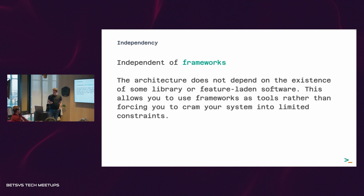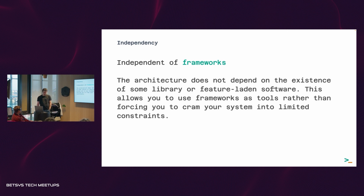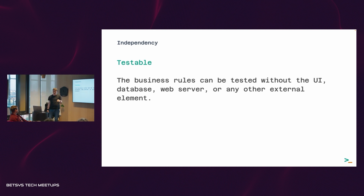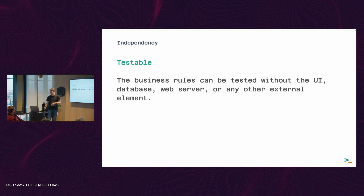Good architecture is independent of several things. It's independent of frameworks — this is easier to say than do, because some frameworks are industry standards that developers are accustomed to. The core of the architecture should not depend on any framework; it should be a conscious choice. It should also be testable — this is critical in a host-target environment like mobile development, where you develop on a laptop but run code on a smartphone. Tests should be executable on CI pipelines without any external device.